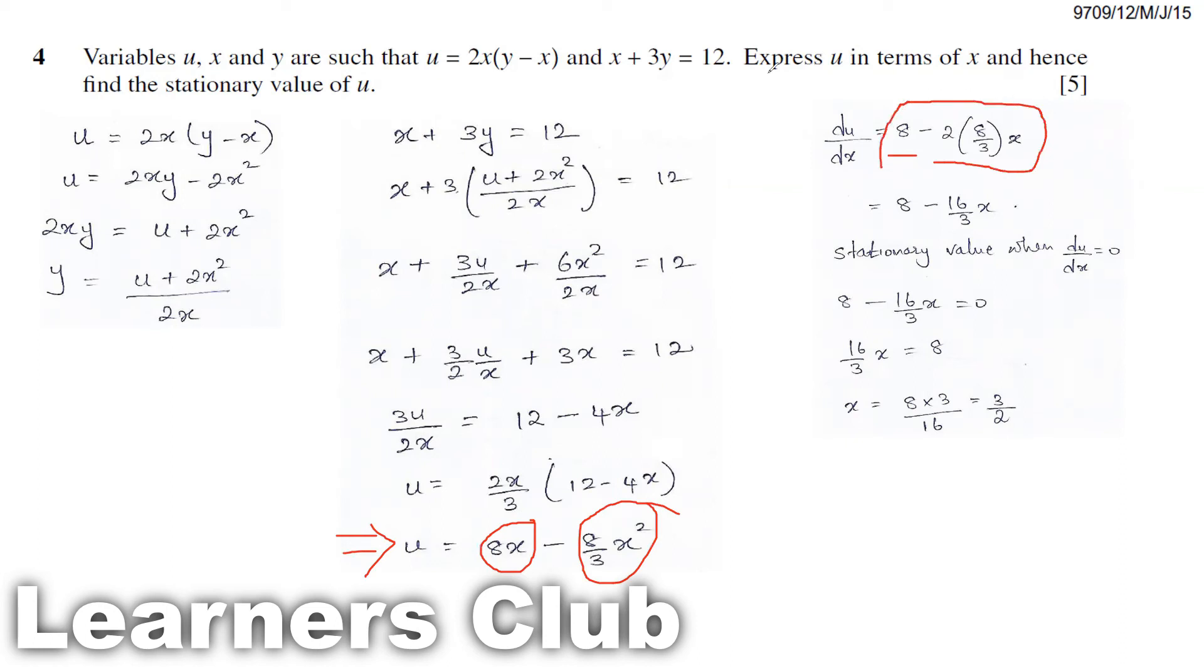We'll obtain the stationary value of u when this differentiated value equals 0. So I equate this term to 0. I take 16x over 3 to the other side. I can cancel this term. This becomes 2, making x as the subject, x equals 3 by 2. So I got my value x equals 3 by 2.